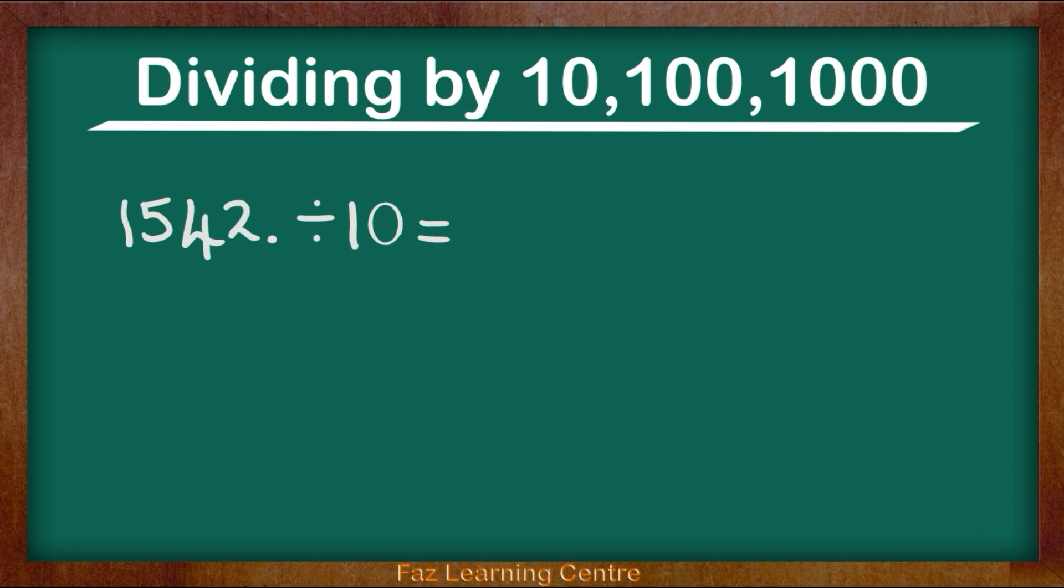So I am making the number 1542 ten times smaller. So I am going to think about how many zeros I have. How many zeros do I have? This is a tip that you can use and it is very good. So we have one zero. Because we have one zero, what we are going to do is we are going to move one time towards the left. The reason why we are moving towards the left is because that is how we are going to make the number 1542 smaller.